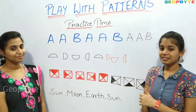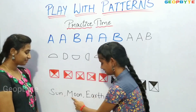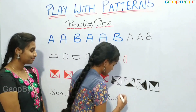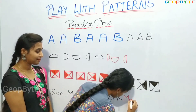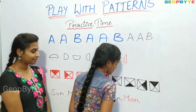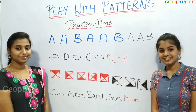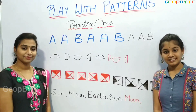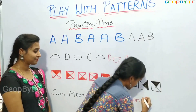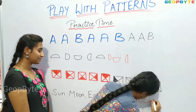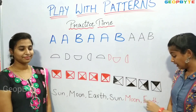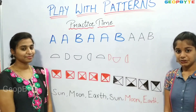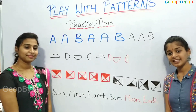After sun, there will be moon. Let us write. After moon, what comes? After moon, there is earth. So after moon, there will be earth. Let us write. After earth, what comes? After earth, there is sun. So after earth, there will be sun. Let us write.